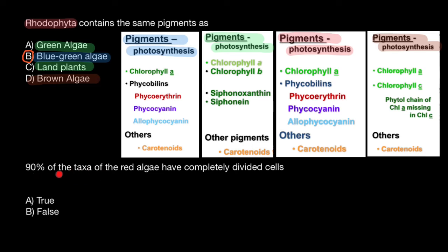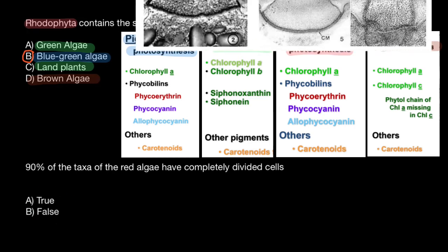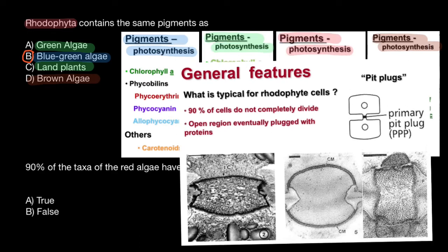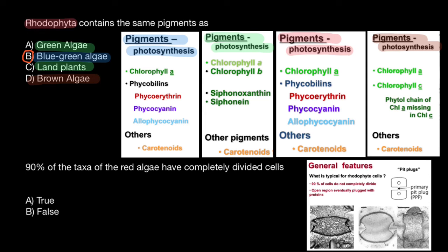The last statement: 90% of the taxa of the red algae have completely divided cells — is it true or false? Take a look at this picture. What is typical for Rhodophyta cells is that 90% of cells do not completely divide. This is called the primary pit plug — an open region eventually plugged with proteins. This dark spot here represents proteins. If you can find a primary pit plug, you can be sure that this is red algae. So this statement is false: 90% of the taxa in red algae have incompletely divided cells.